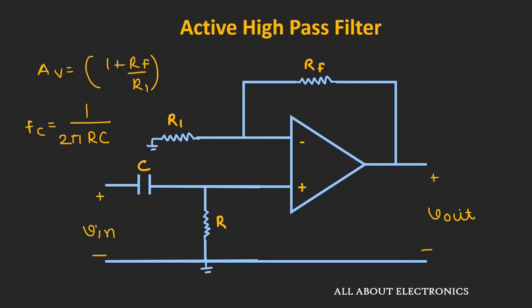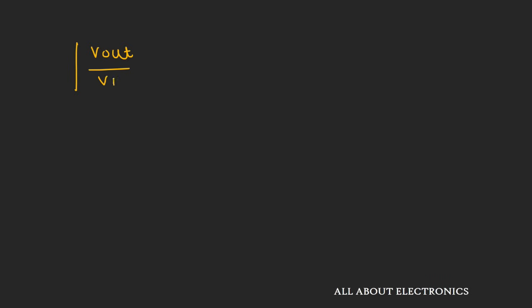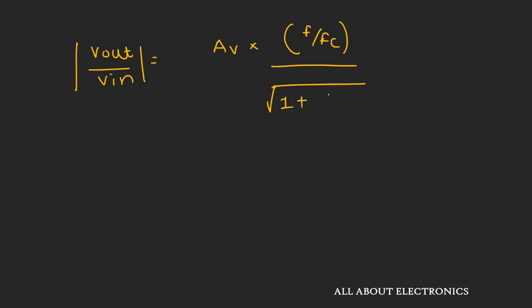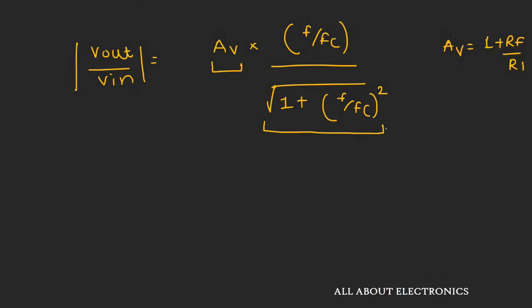Now let's see the expression for the transfer function for this active high-pass filter. The transfer function can be given by the expression Av times (F by Fc) divided by under root (1 plus F by Fc whole square), where Av is nothing but 1 plus Rf by R1 — the gain provided by the op-amp. This expression has two components: the gain provided by the op-amp, and the response of a high-pass filter.